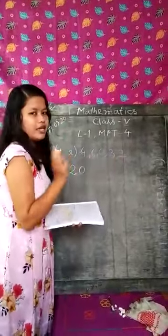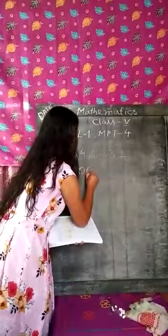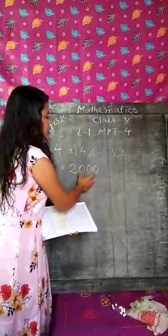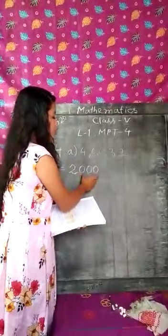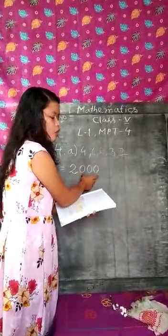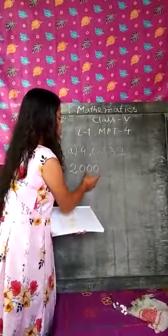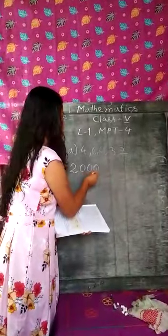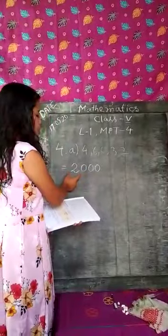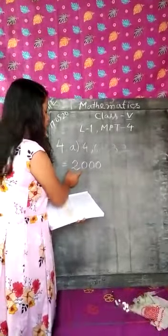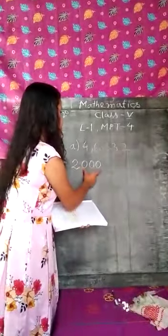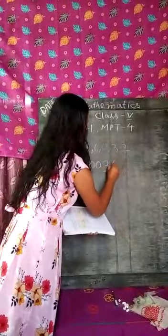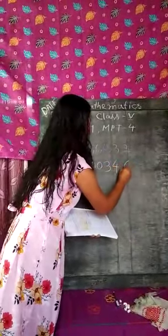To make 7 digits we will write 2 more 0s. We repeat the smallest digit, which is 0, two times. The second smallest digit is 2, which we write at first. Then 0, then 3, then 4, then 6.